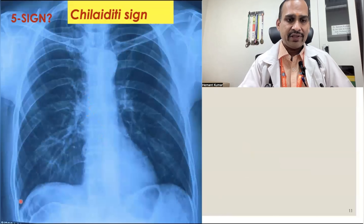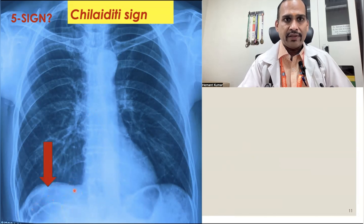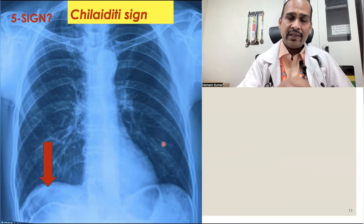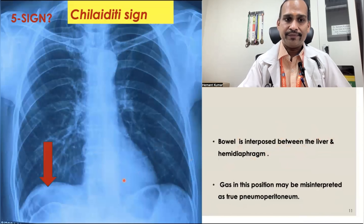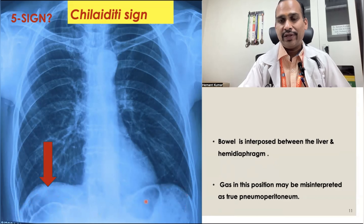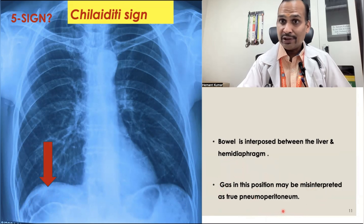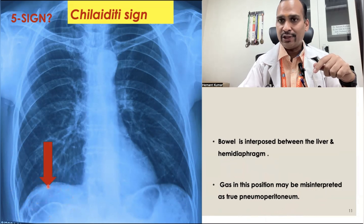Sign 5 is the Chilaiditi sign. This occurs when there is air bubble interposition between the diaphragm and the liver — small intestine is trapped between the diaphragm and the liver. We can sometimes misinterpret it as pneumoperitoneum, but this is not pneumoperitoneum. It is an air bubble trapped between these two structures.